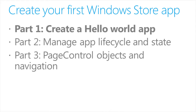We'll show how to create a new project, build some basic HTML for our Hello World page, and handle a button click event. Next, we'll show how to switch between the built-in light and dark themes and how to create your own custom CSS styles. And finally, we'll show how to use the Windows Library for JavaScript rating control.